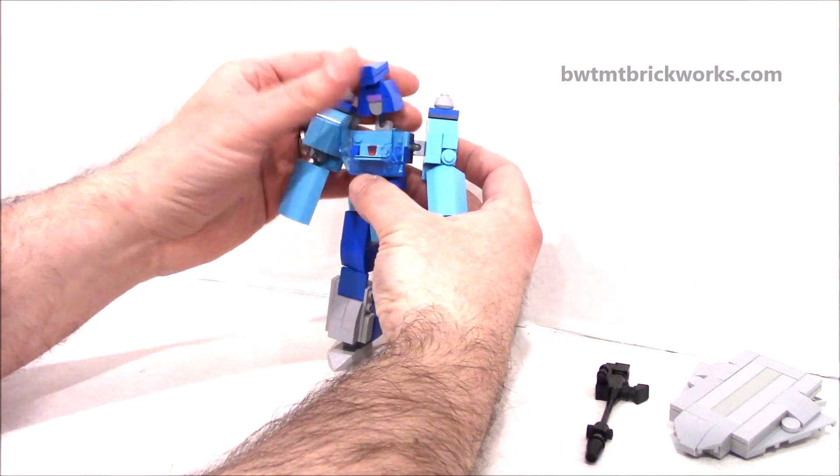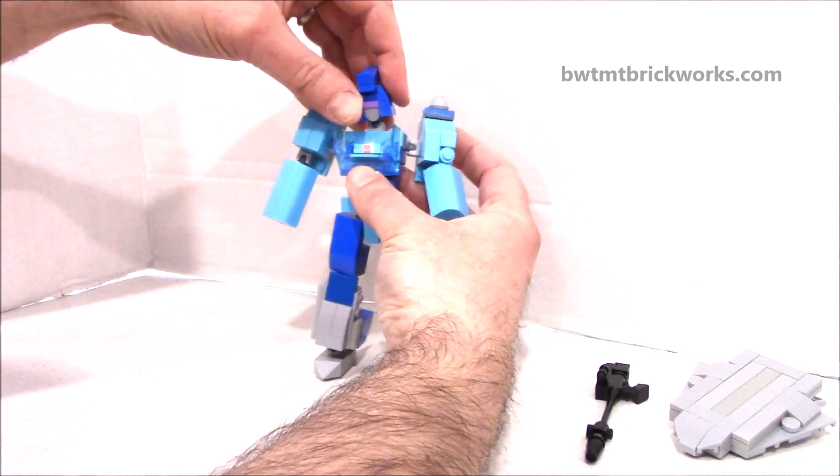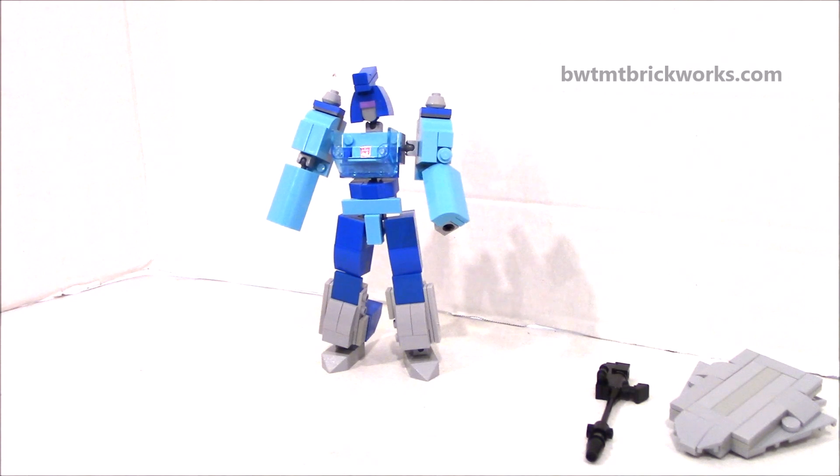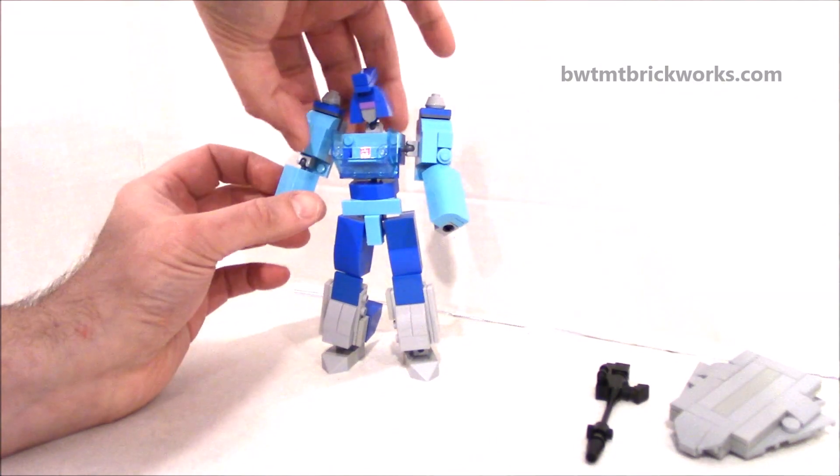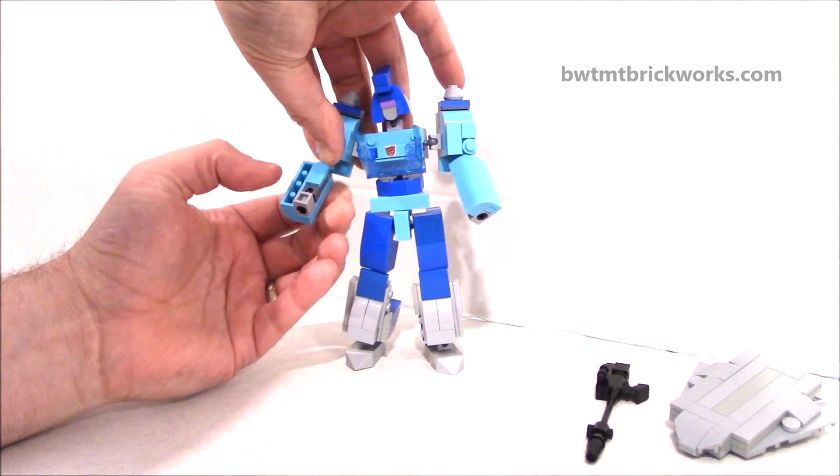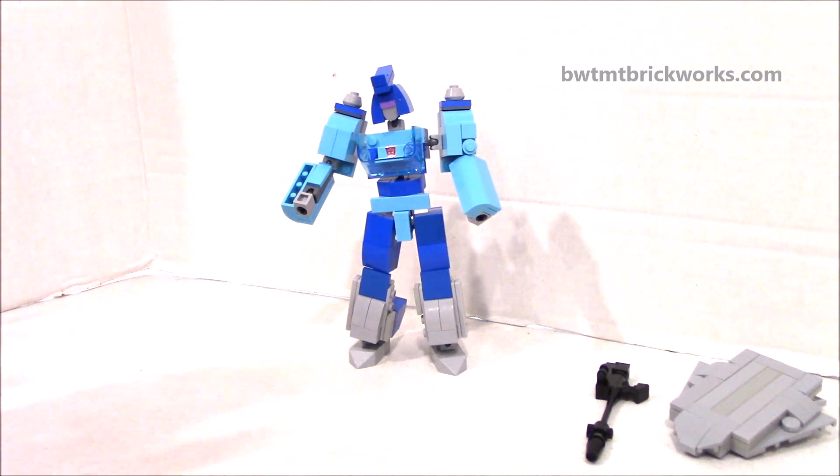From there, you're going to want to bring back this section, which is the head. You can just push it down a little bit on the ball joint. You're going to need a little clearance to get up there. Now rotate your arms around like this. Do the same on the other side.